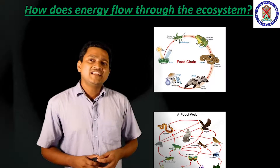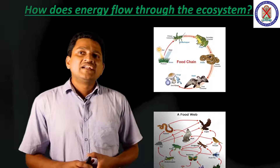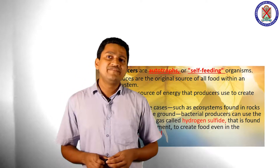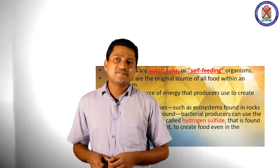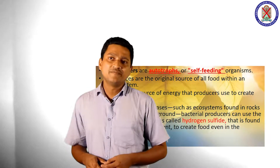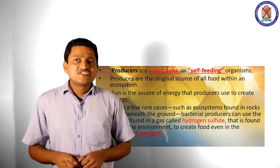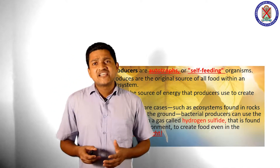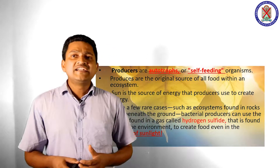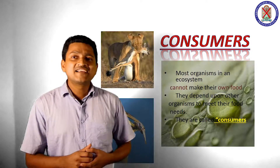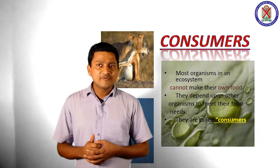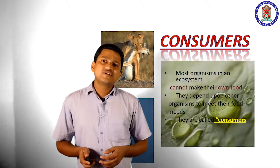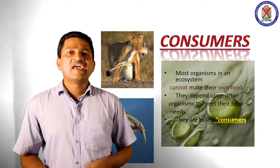The next group of organisms are the decomposers. Decomposers are organisms that break down and feed off of the waste and dead organisms within an ecosystem. Decomposers are nature's built-in recycling system. By breaking down material from dead trees and animals, decomposers return nutrients to the soil and create another food source for herbivores and omnivores within the ecosystem. Main examples of decomposers are mushrooms, bacteria, etc.